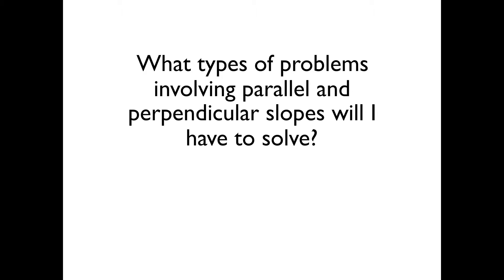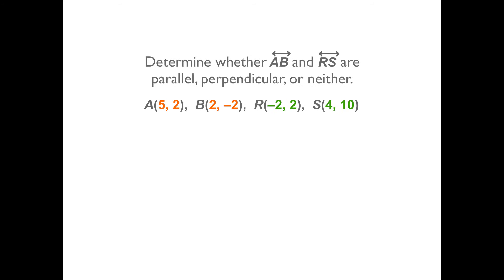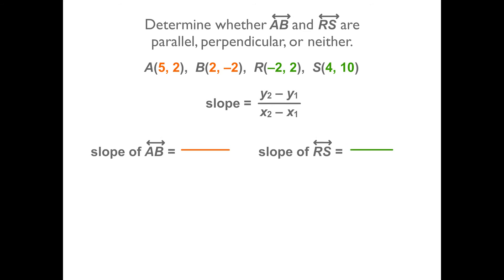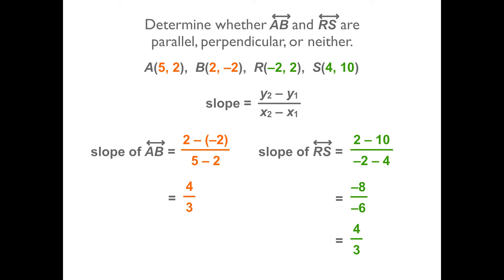What types of problems involving parallel and perpendicular slopes will I have to solve? There are various problems you'll need to solve involving slope of parallel and perpendicular lines. In this problem, we need to determine whether these two lines, AB and RS, are parallel, perpendicular, or neither. First, calculate the slope of each line. The slope of line AB is 4 thirds. The slope of line RS is also 4 thirds. So, these two lines are parallel.